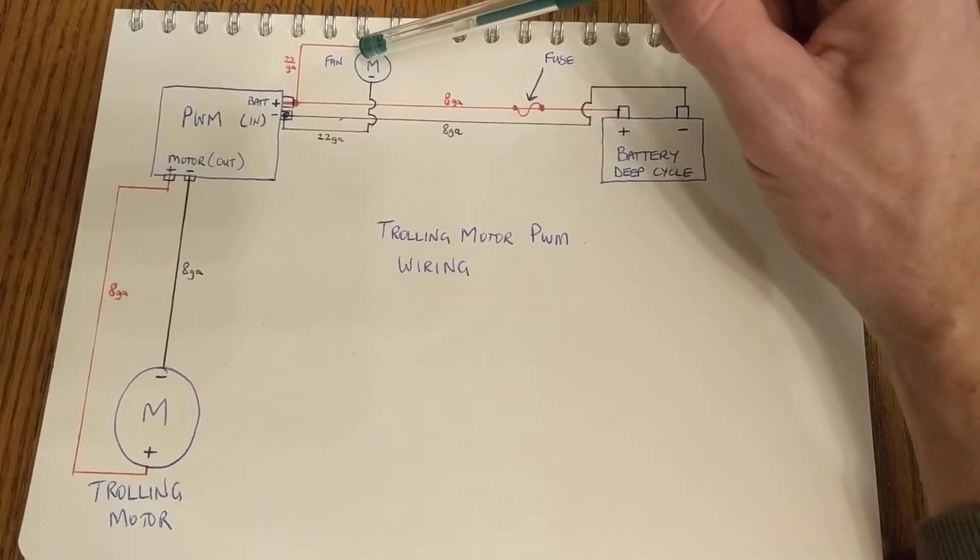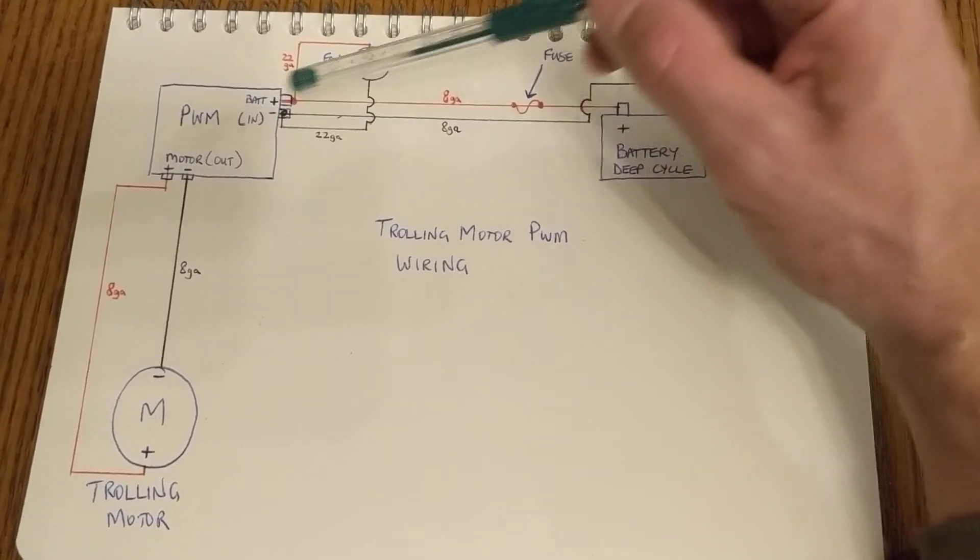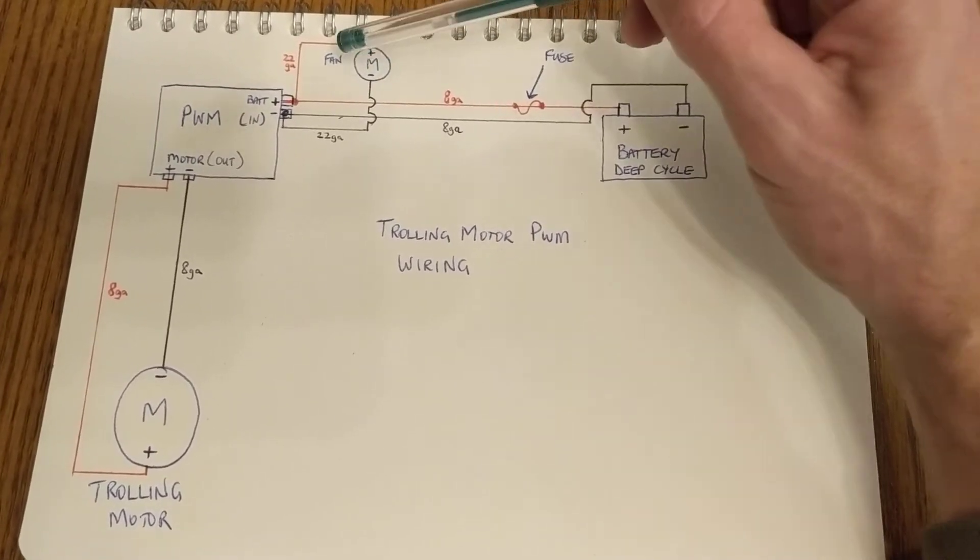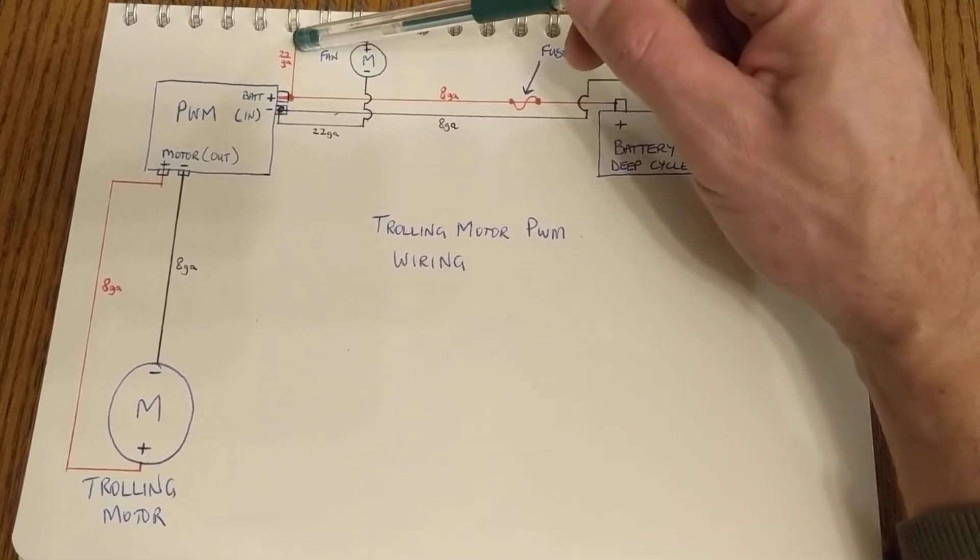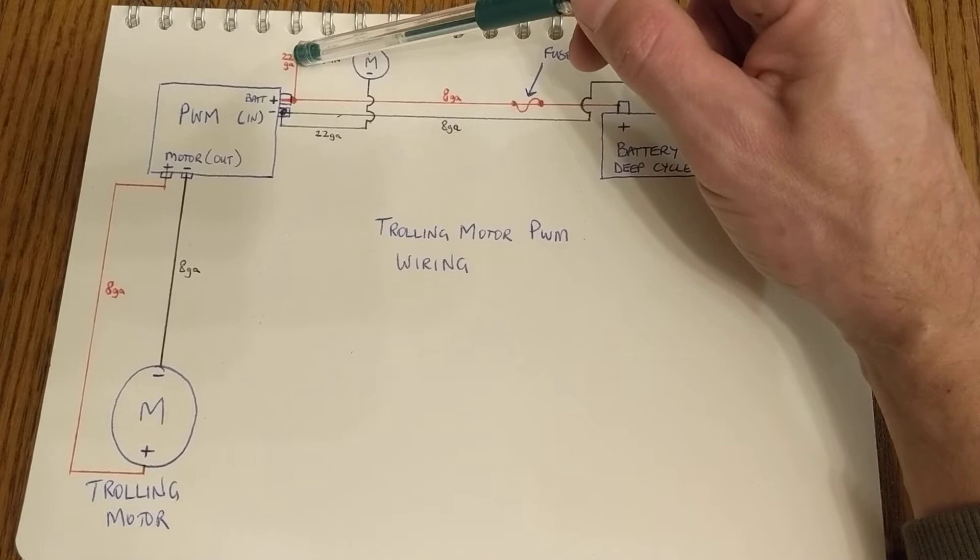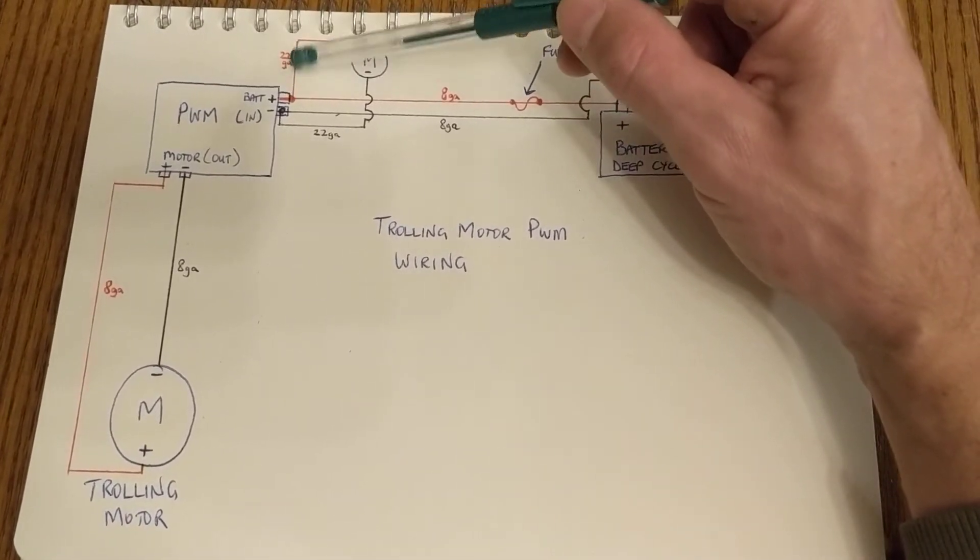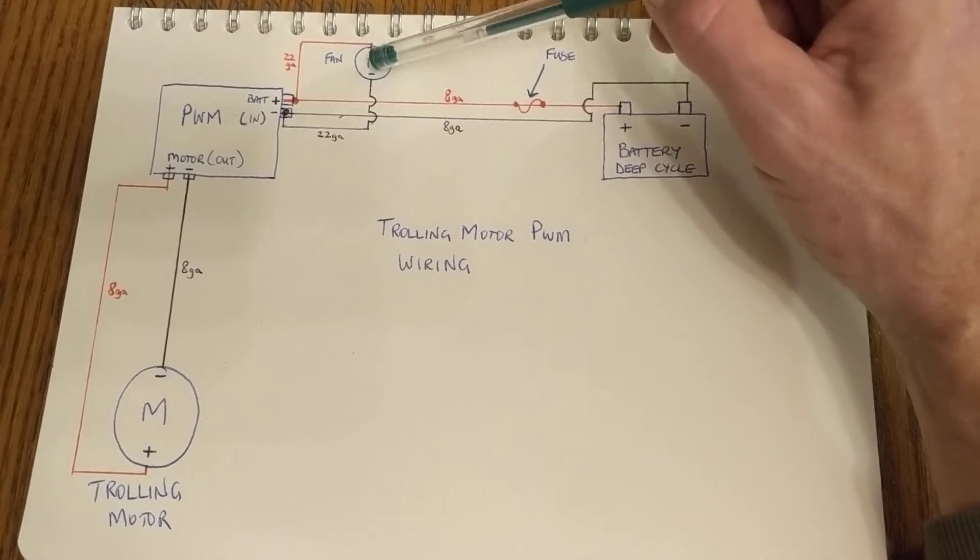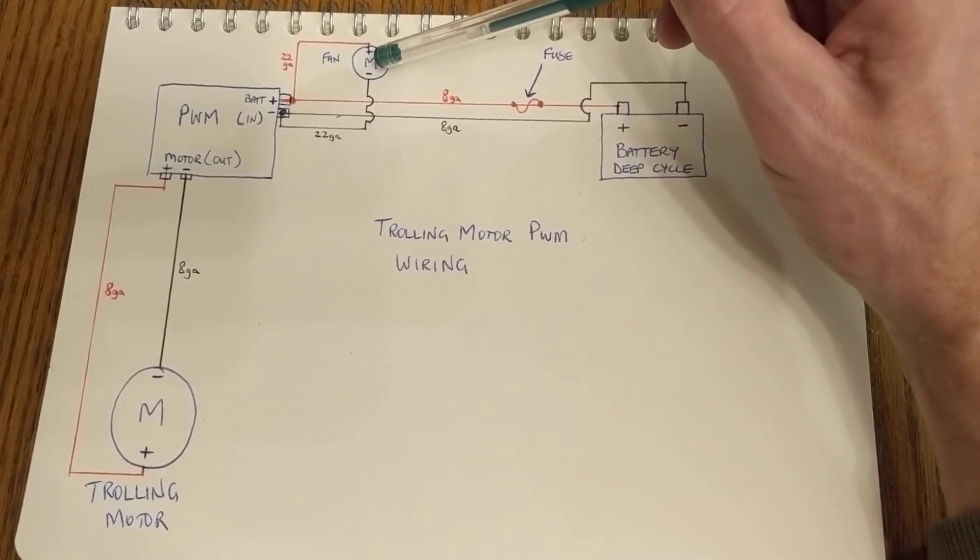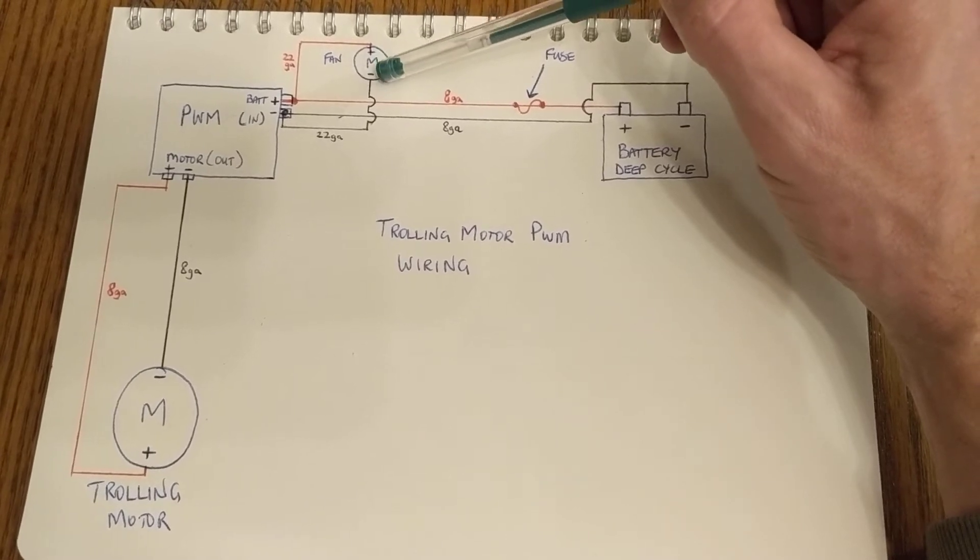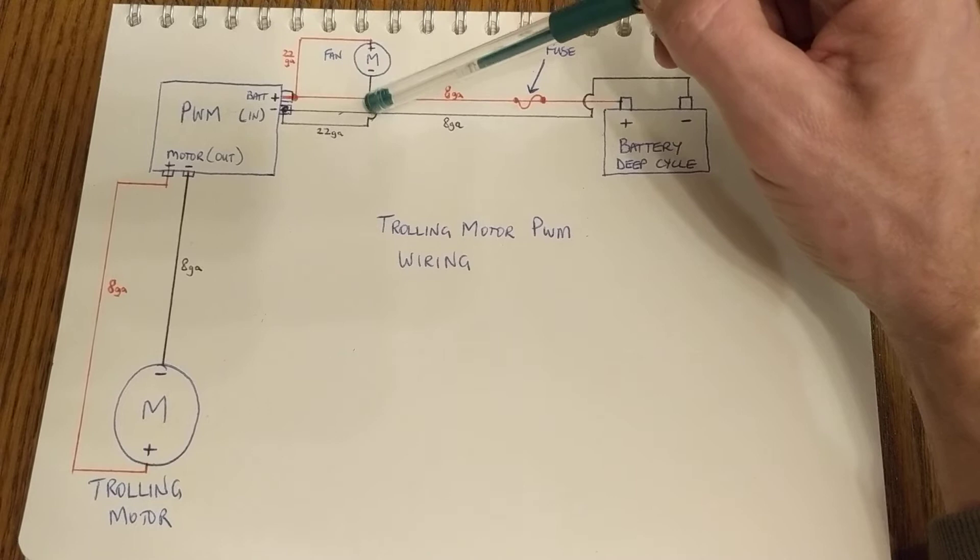Now I also have a fan in my PWM box to keep the thing cool because it does get pretty warm. These wires are fairly small. The 22 gauge hole in my wire strippers was a little big for the wire so they're probably smaller than that. This little fan motor draws less than 0.7 amps I think. So the wire is very small.